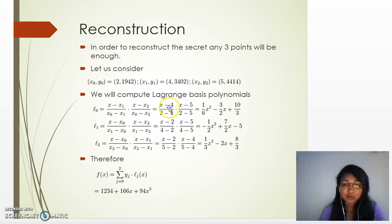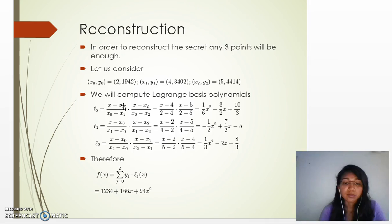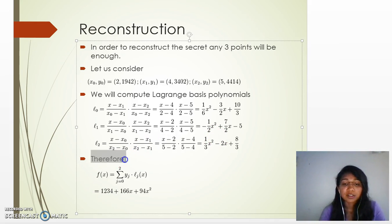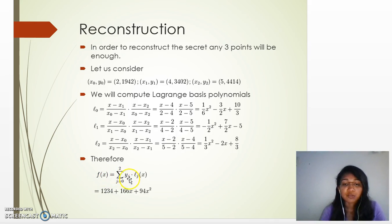We put values for (x_0, y_0), (x_1, y_1), (x_2, y_2) to calculate l_0: for example, l_0 = [(x - x_1)/(x_0 - x_1)] * [(x - x_2)/(x_0 - x_2)]. The function f(x) can then be written as the summation of y_j * l_j(x) for j from 0 to 2, which reconstructs the original polynomial and hence the secret.